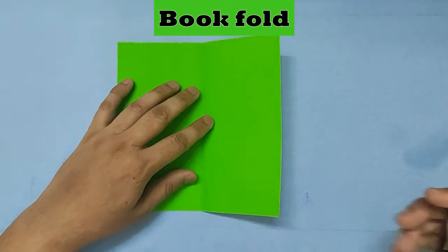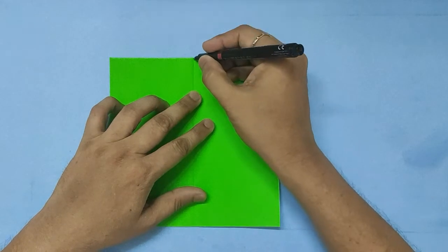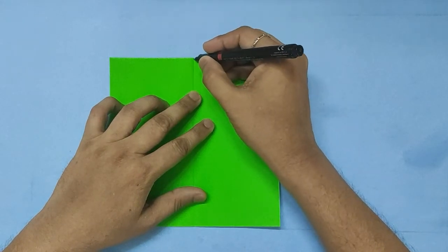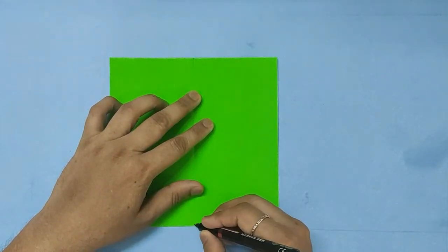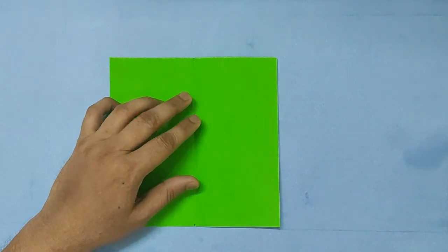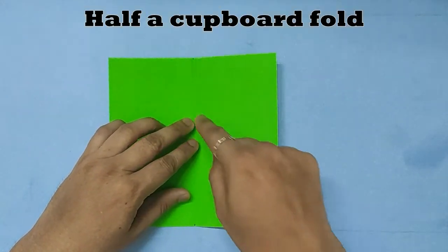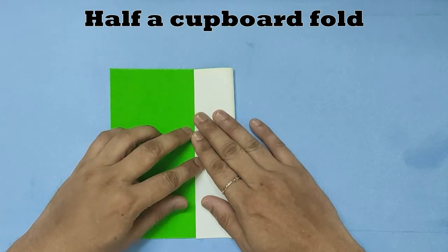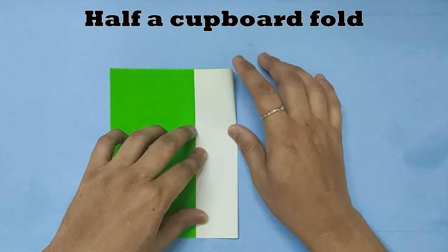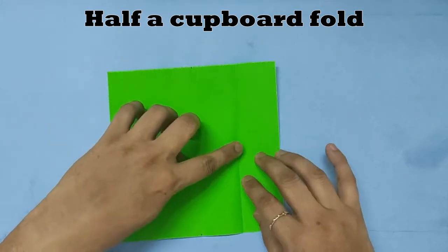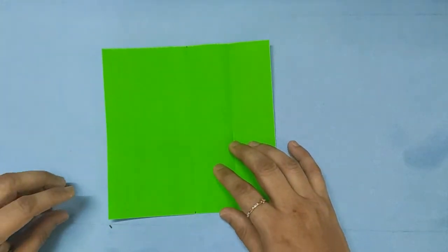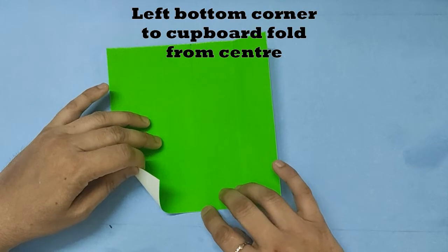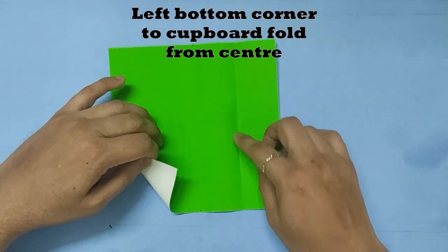We will mark the place where we have folded. That will give me 90 degrees. We will take the edge and bring it to the center.